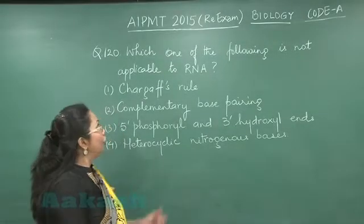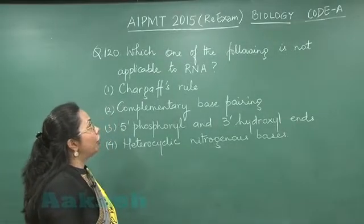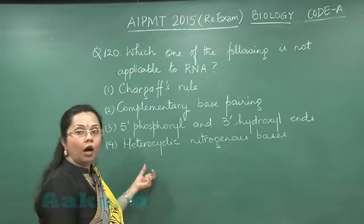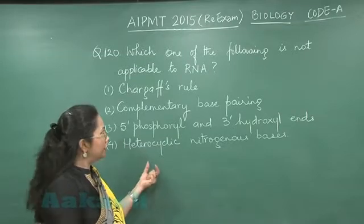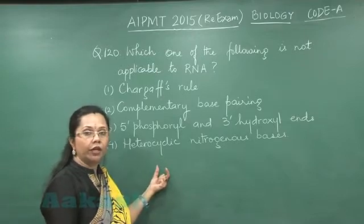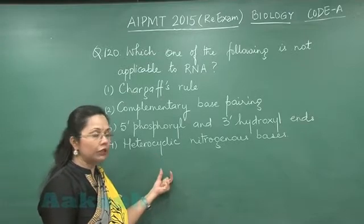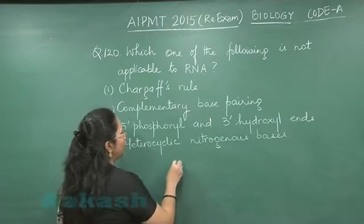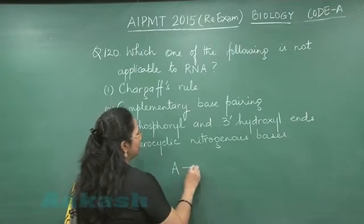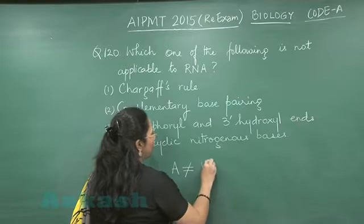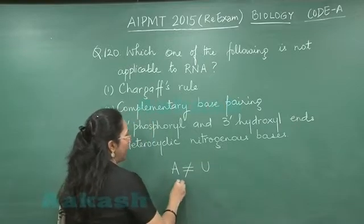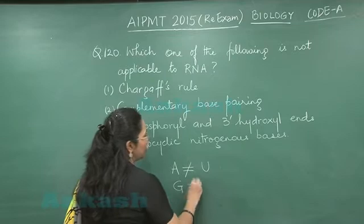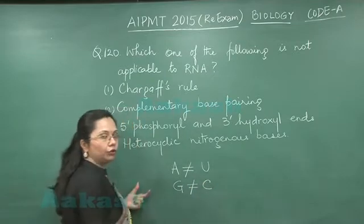Question 120: which one of the following is not applicable to RNA? We know RNA is a polynucleotide which is single stranded. So, if it is single stranded, the amount of adenine is not equal to the amount of uracil, and the amount of guanine is not equal to the amount of cytosine.